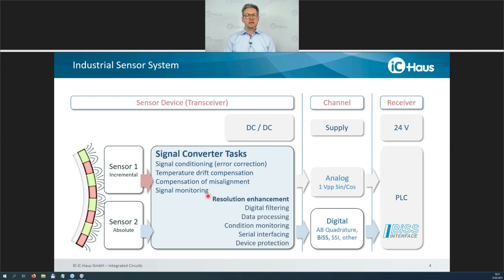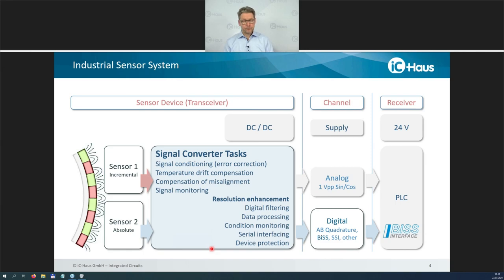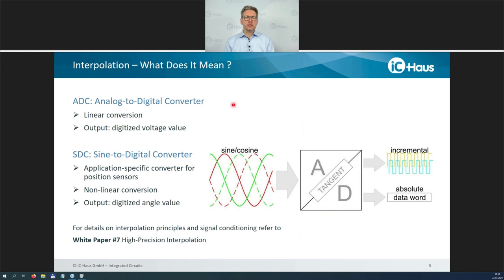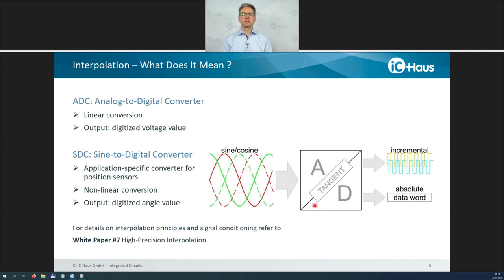Going out with a digital word means we have additional tasks: resolution enhancement by interpolation, digital filtering and data processing, until we have the most accurate position data to output over a digital interface. A brief word on interpolation: you're likely familiar with analog-to-digital converters that convert an applied input voltage to a linear value. The sine-to-cosine digital converter does something similar, but its core function is a non-linear transmission — the input is sine-cosine, and the digitized word we get is a phase angle. There are different principles used for this core engine; I can guide you to a white paper on our website covering several concepts.